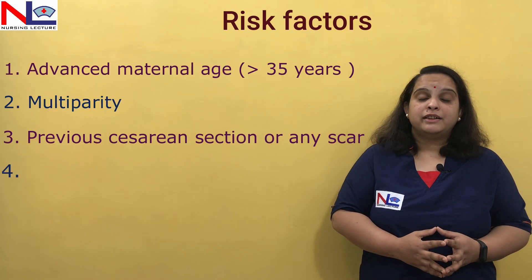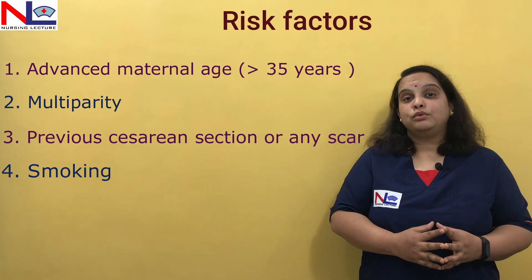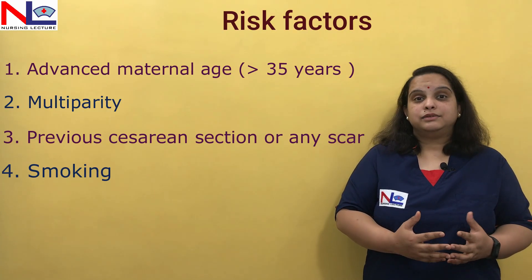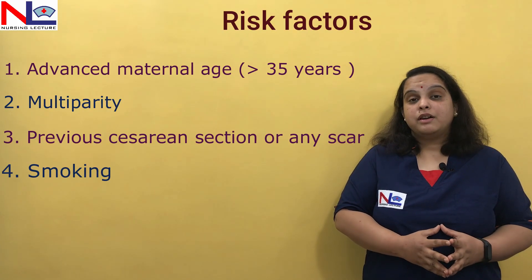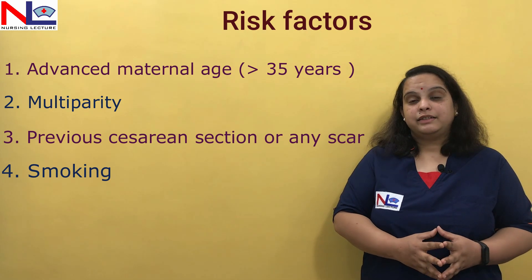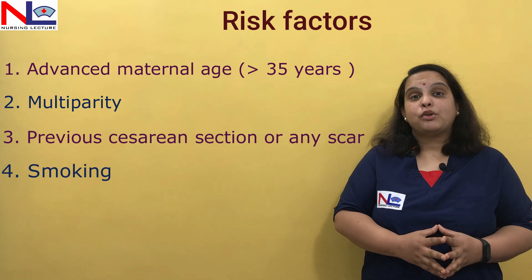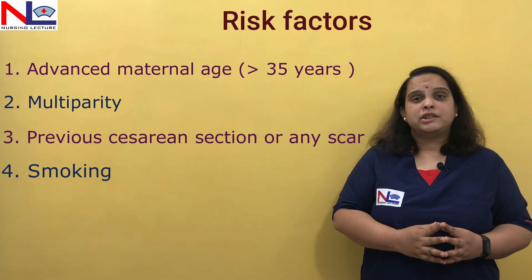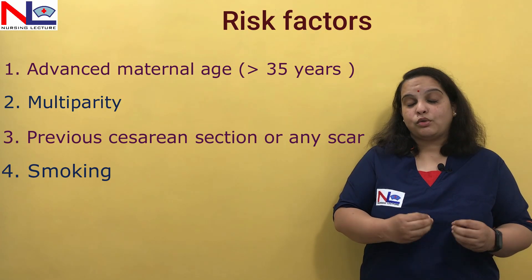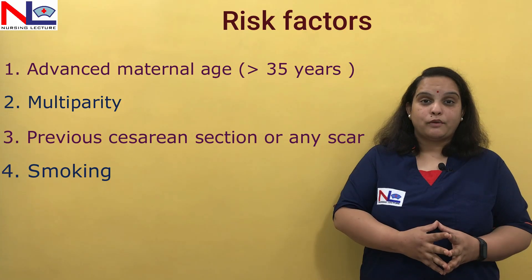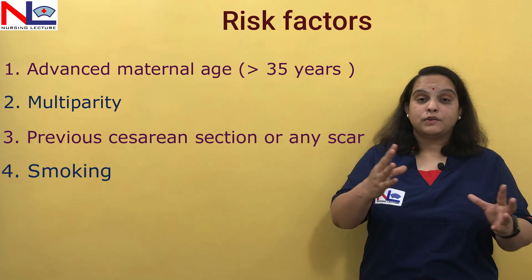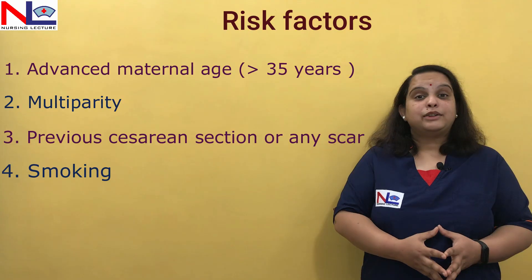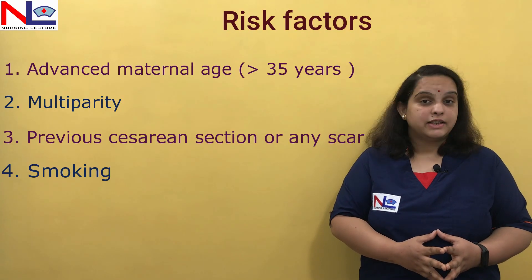If the mother is habituated to heavy smoking, she may have carbon monoxide in her body, which can cause hypoxemia. With this hypoxemia, the placental tissues grow more — there is placental hypertrophy — and because of that, the placenta becomes larger and encroaches up to the lower segment.